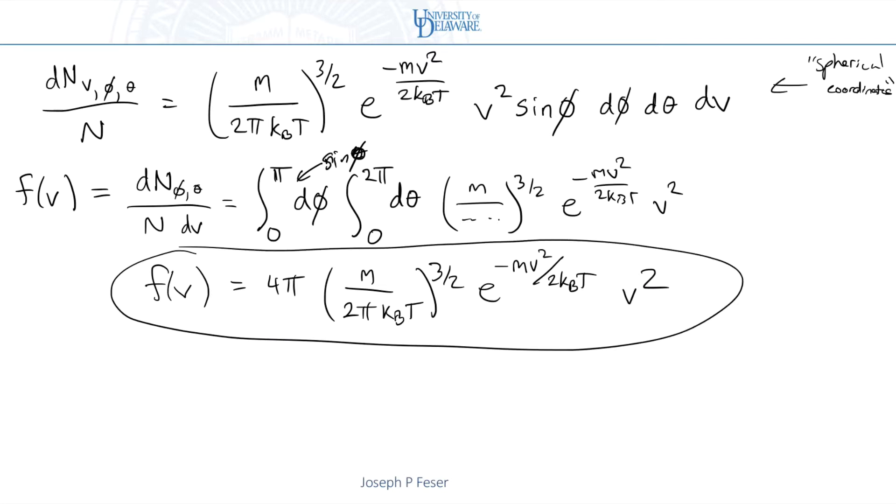So this is the probability of molecule being between speed V and V plus delta V. Alright, so let's plot that.